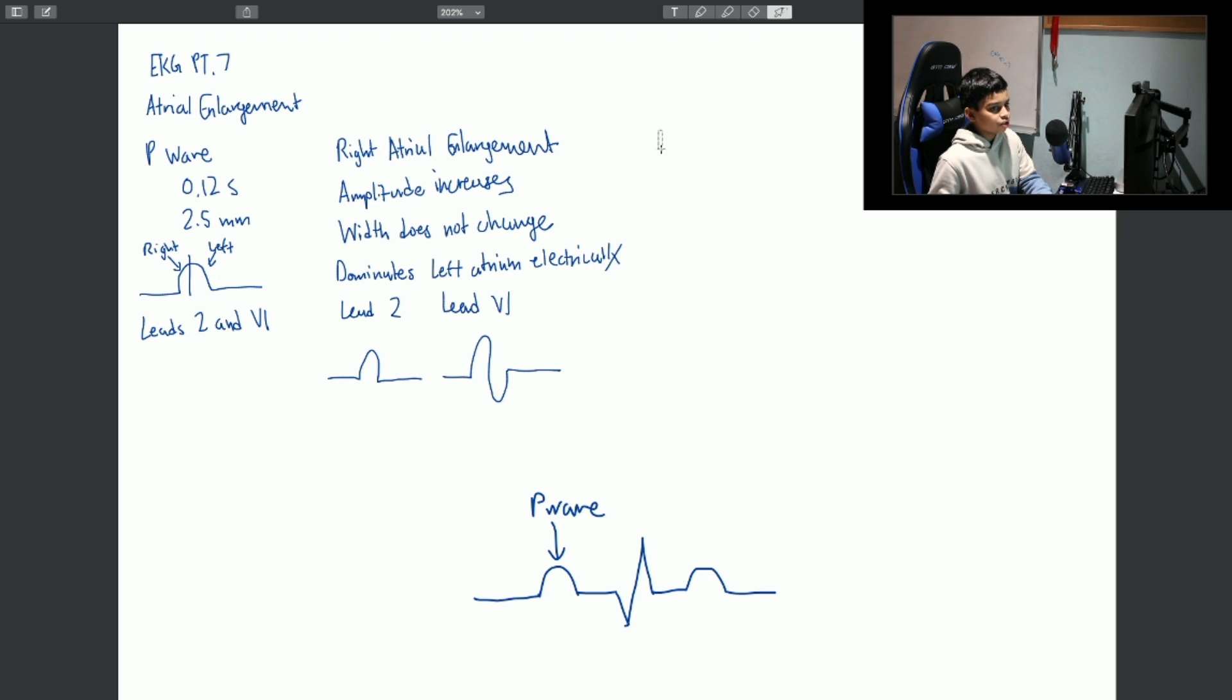Now let's do left atrial enlargement. So, oh yeah, I forgot one thing. When diagnosed, the P wave has an amplitude ascending 2.5 mm in leads 2, 3, and AVF.